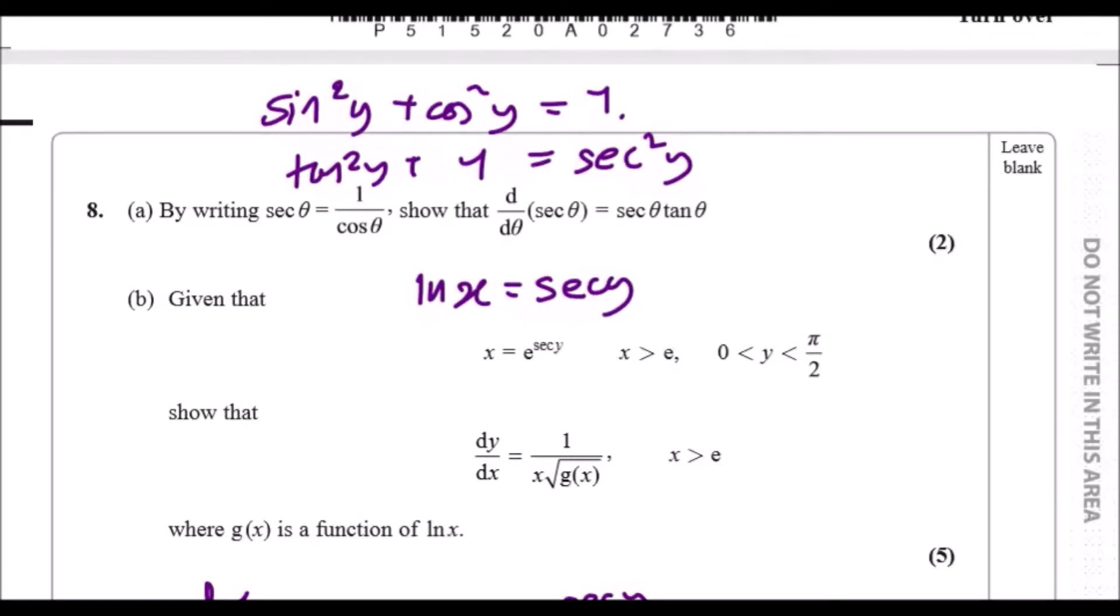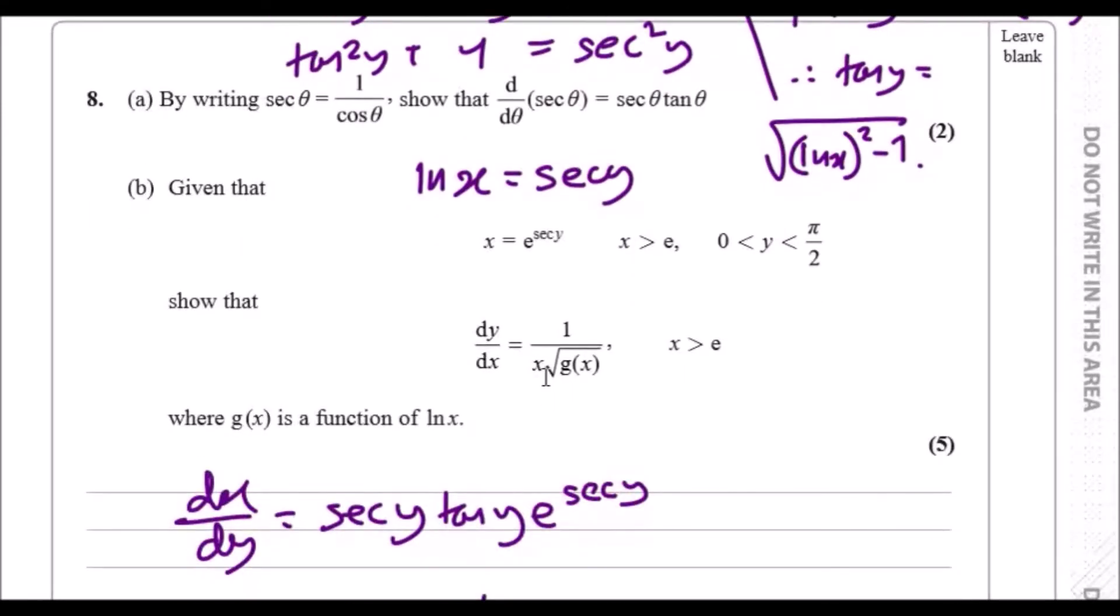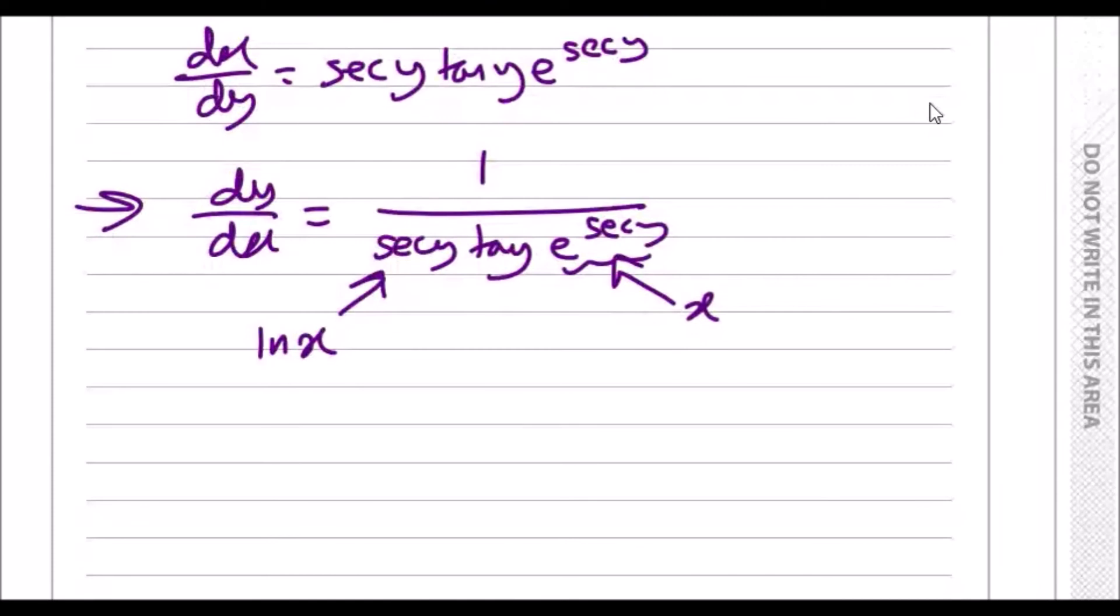This means tan² y plus 1 equals (ln x)². Making tan y the subject: minus 1, square root, you've got tan y equals the square root of (ln x)² minus 1. Let's go ahead and replace tan y with that.